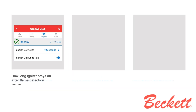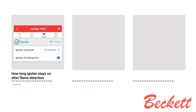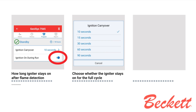Select how long the igniter stays on after flame detection using the ignition carryover selection. Options range from 10 to 90 seconds; 10 seconds is standard. Choose whether the igniter stays on for the full cycle — enable for continuous ignition or disable for interrupted ignition. Note: this feature is disabled on controls programmed with CSD1 settings from Beckett.